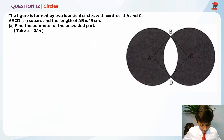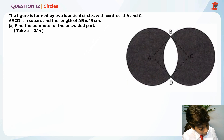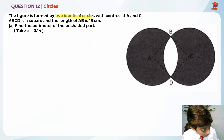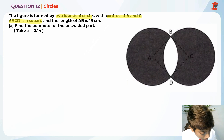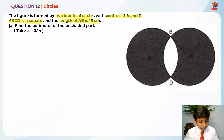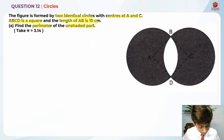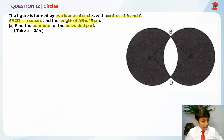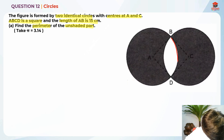Let me highlight some key information in this question. It's formed by two identical circles with center A and C. ABCD is a square and the length AB is 15 cm. Find the perimeter of the unshared part. The unshared part is here, right?